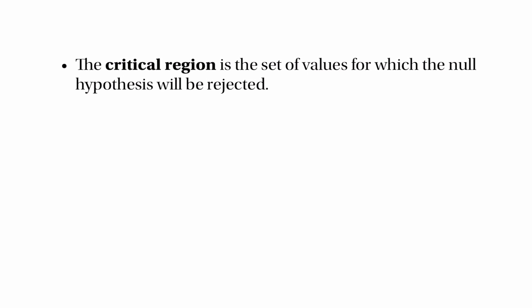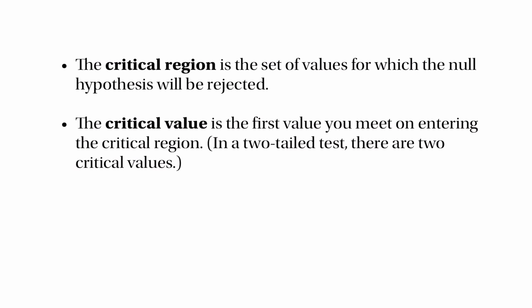The critical region is the set of values for which the null hypothesis will be rejected. And the critical value is the first value that you come to on entering the critical region. Imagine that you start out from the expected value of your test statistic and move to the left or to the right along the number line. The critical value is the first number you come to that's inside the critical region.